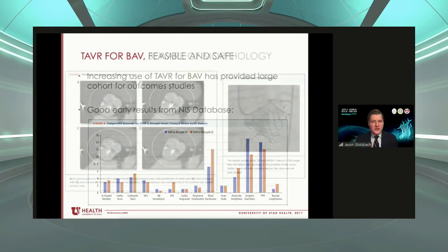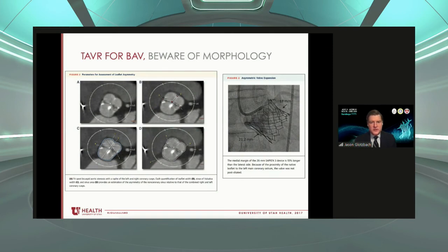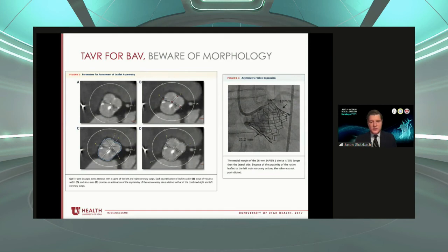The morphology is quite heterogeneous, and one bicuspid valve is not the same as another. One thing we really focus on at our heart team at the University of Utah is the symmetry of the valve. The more symmetrical and more circular the valve annulus, leaflets, and aortic root, the more amenable it is to TAVR. The more asymmetric — asymmetric calcified leaflets or a more oval-shaped root and annulus — the higher the risk of paravalvular leak and poor hemodynamic outcomes, and those are patients you may want to consider for surgery.